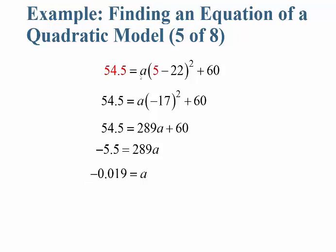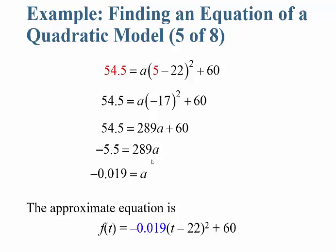So the approximate equation is f of t equals negative 0.019 times (t minus 22) squared plus 60.